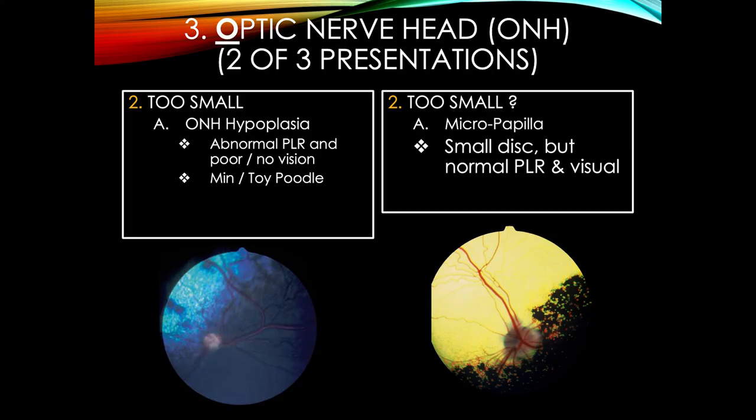These are too small. The difference between hypoplasia and micropapilla all comes down to whether they're visual or not. If they lack vision or have visual compromise — hypoplasia. If they're not — micropapilla. That dog with the yellow tapetum was visual and responding well, yet it's not as big an optic nerve head as you'd expect.